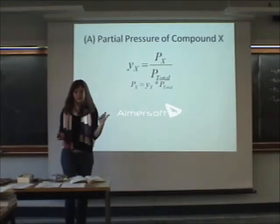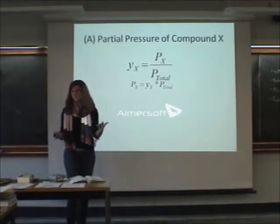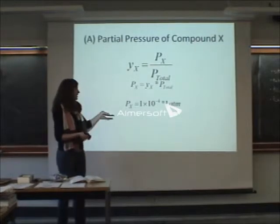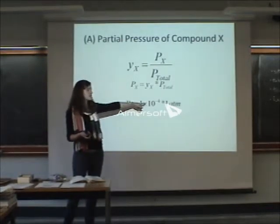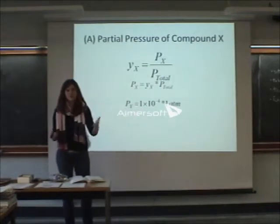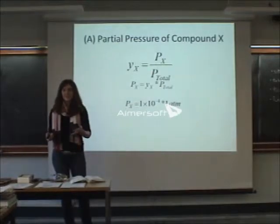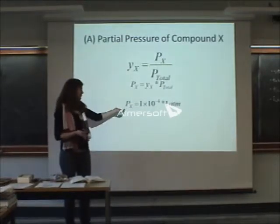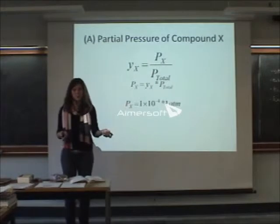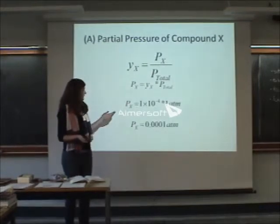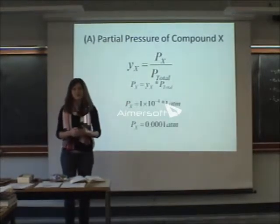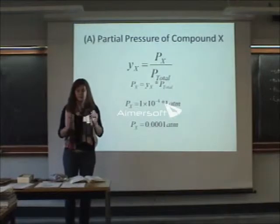We're given our values, right? This one's pretty easy, you just plug them in. We know that it's 1 times 10 to the negative 4th. Everyone knows what parts per million is, right? So, 1 times 10 to the negative 4th, and then 1 atmosphere, so that gives you a partial pressure of 0.0001.